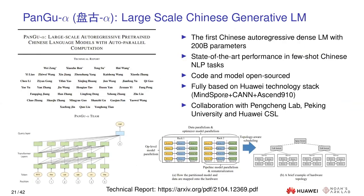Pangu Alpha is another model we developed in April of last year — a very large model with about 200 billion parameters, and the first autoregressive dense language model for Chinese. It is fully based on Huawei technologies including software, hardware, and AI tools, developed in collaboration with Pengcheng Lab, Peking University, and other Huawei departments. This is a quite influential work.